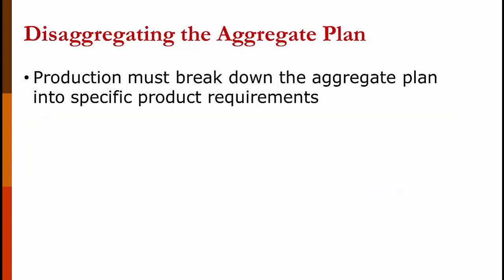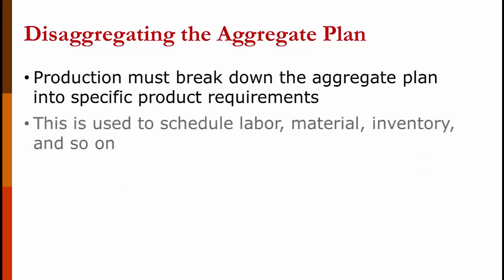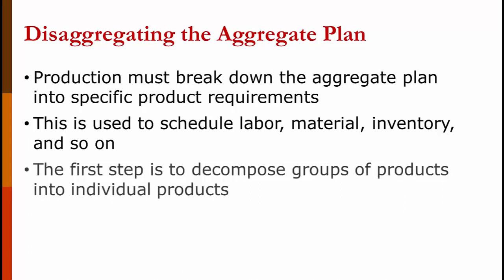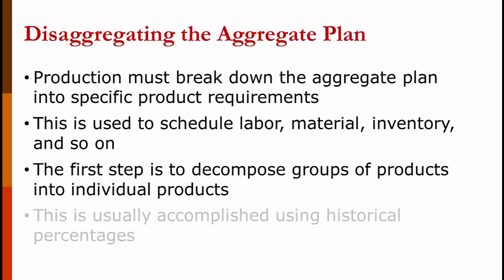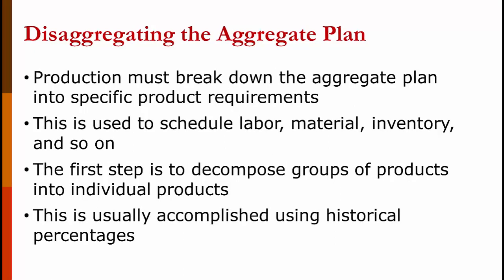Production must break down the aggregate plan into specific product requirements for every single product that they're going to produce. They then use this to schedule labor, material, machinery, production, and so on. The first step is to decompose groups of products into individual products. So your aggregate plan might have a plan for lawn mowers — you break that down into push mowers, self-propelled mowers, and riding mowers. We usually accomplish this using historical averages. For example, if 5% of our historical sales have been push mowers, whatever we plan to produce in terms of mowers, we'd schedule 5% of those as push mowers.